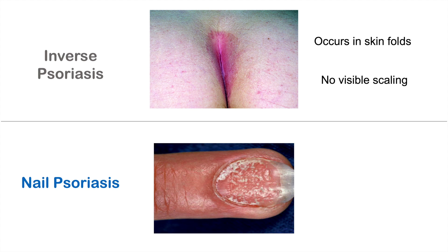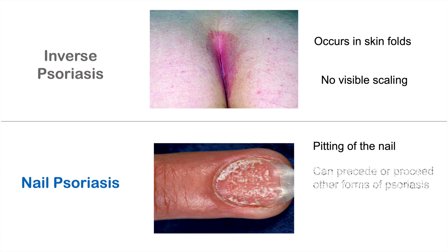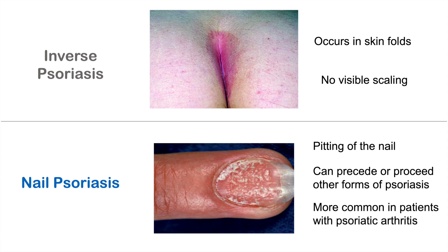Nail psoriasis affects the nail and presents with nail pitting. If you see pitting of the nail alongside signs of psoriasis, that is nail psoriasis. It can precede or follow other forms of psoriasis — a patient may have nail pitting without other skin manifestations, or develop it alongside plaque psoriasis. Nail psoriasis also has associations with psoriatic arthritis: if a patient has arthritic joint symptoms and nail pitting, they most likely have psoriatic arthritis.